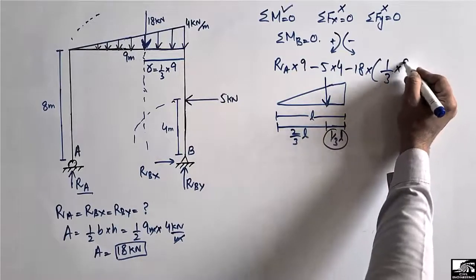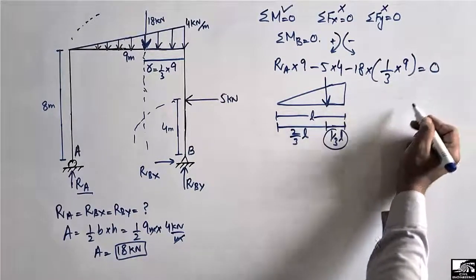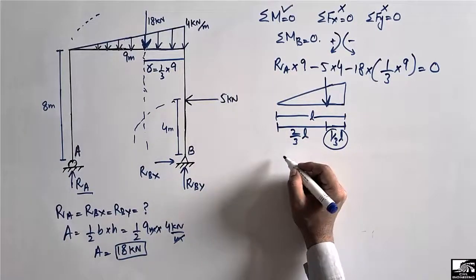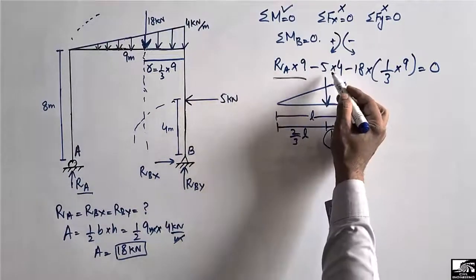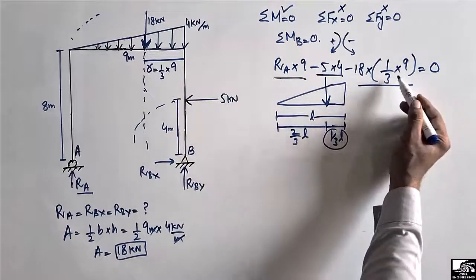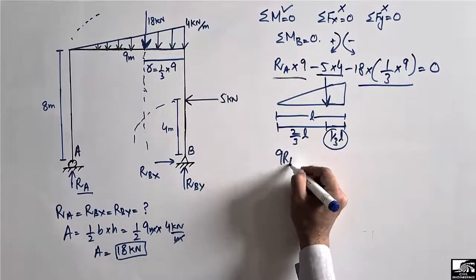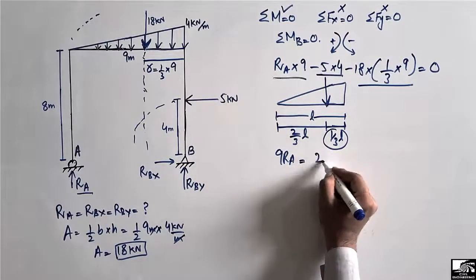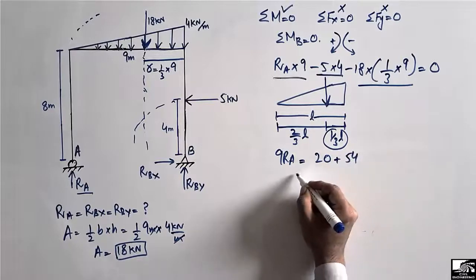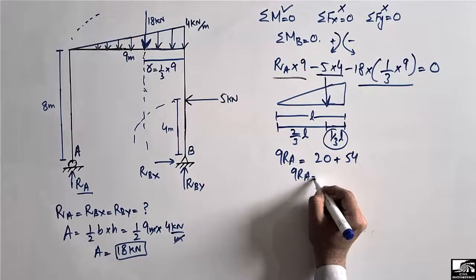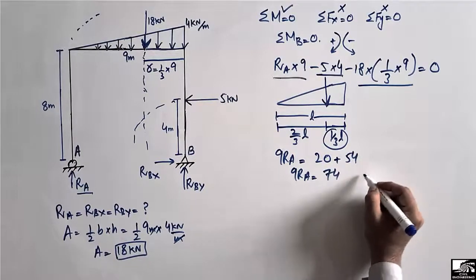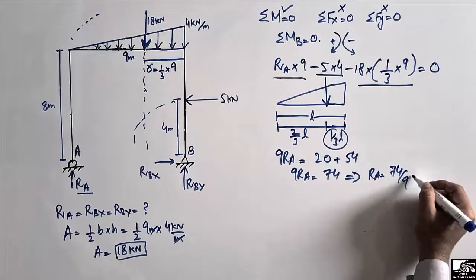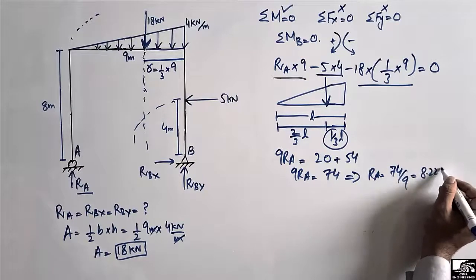So the moment arm for the 18 kilonewton load is 3 meters. Taking summation of moments about point B equal to zero: 9Ra minus 20 minus 54 equals zero, giving 9Ra equals 74. Therefore Ra equals 74 divided by 9, which equals 8.22 kilonewtons.